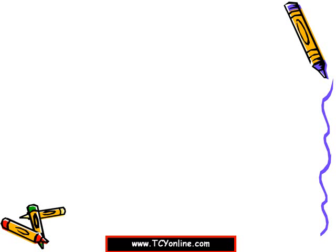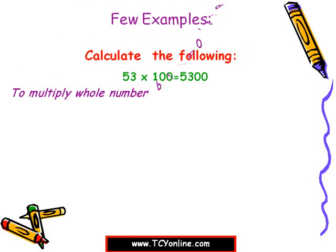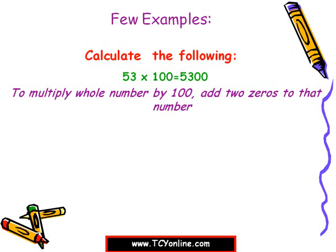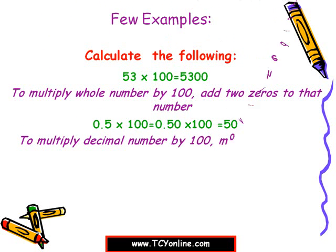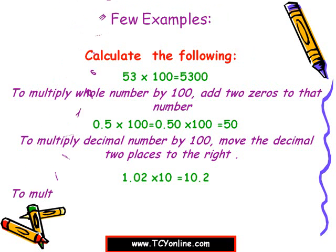Let's see a few examples. First, 53 times 100: multiplying a whole number by 100, we add two zeros, so 53 × 100 = 5300. For 0.5 times 100, we move the decimal two places to the right — but there is only one digit after the decimal point, so we add a zero first to create two decimal places, giving us 50. Next, 1.02 times 10: we move the decimal one place to the right, so we get 10.2.